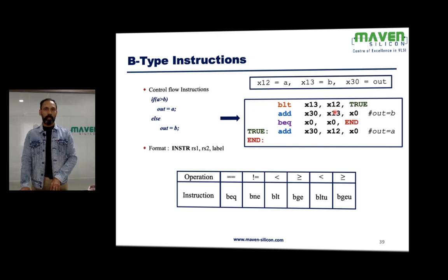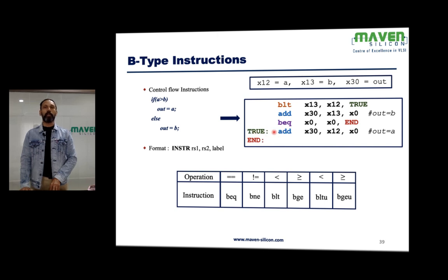If the condition BLT X13, X12 is true, it jumps to the 'true' offset and executes: ADD X30, X12, X0 — since X0 is 0, out becomes A (X12). If the condition is false, execution continues sequentially with the next instruction: ADD X30, X13, X0, making out equal to B. This is non-sequential branch execution when true, and sequential PC = PC + 4 when false.